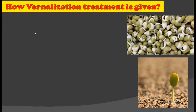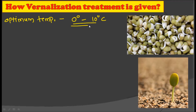Now, how is the vernalization treatment given — how do we use it to induce early flowering in plants? The optimum temperature required for vernalization varies from 0°C to 10°C. It depends on the species of plant; some species require 0°C while others may require up to 10°C chilling temperature during their seed germination. This temperature may vary from species to species.